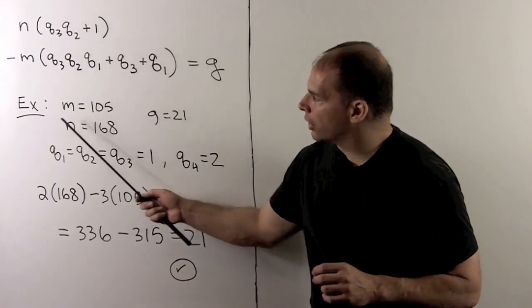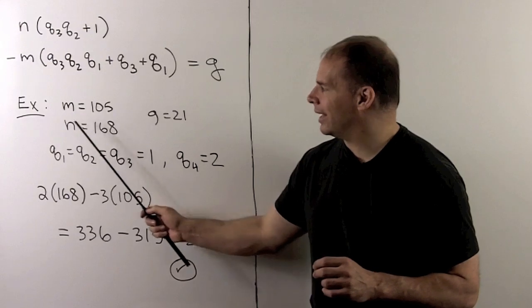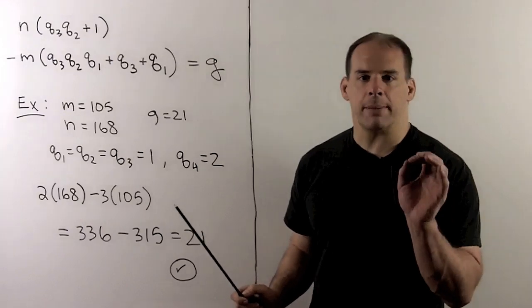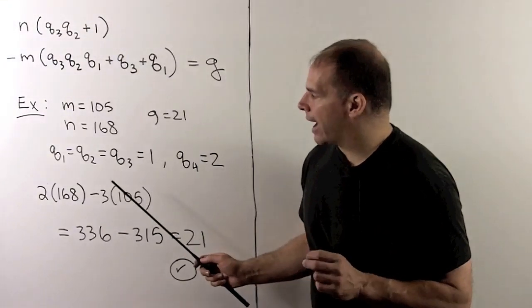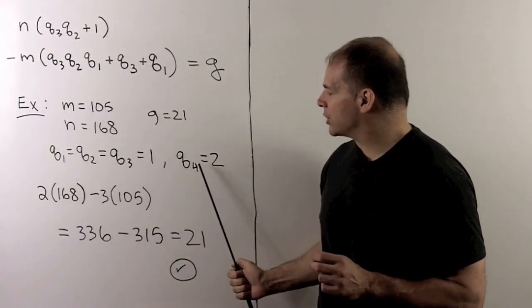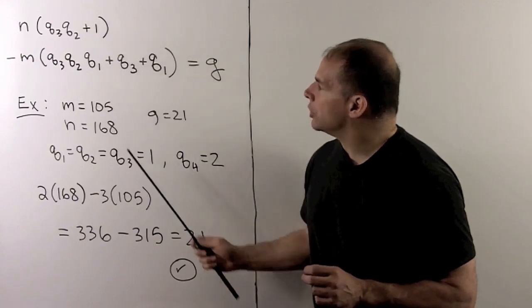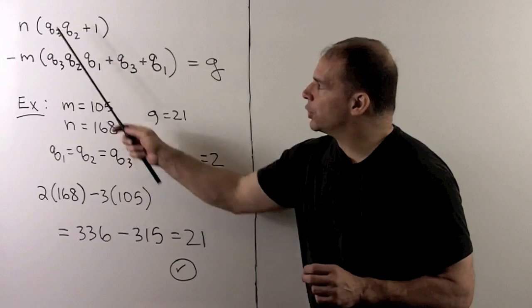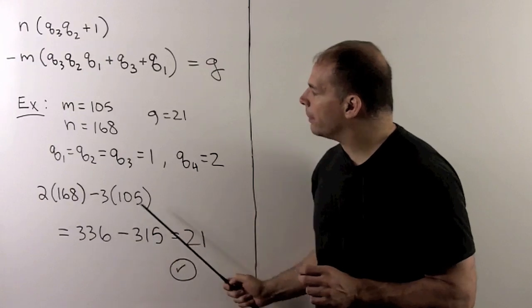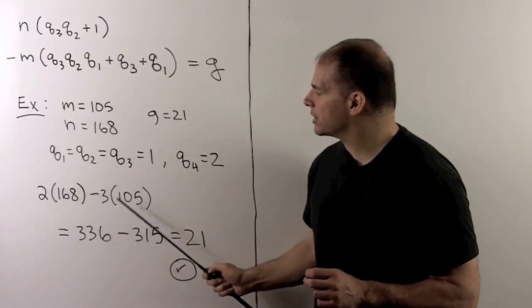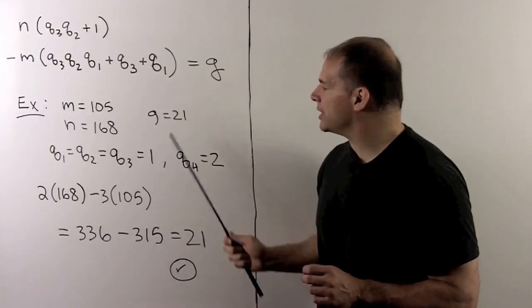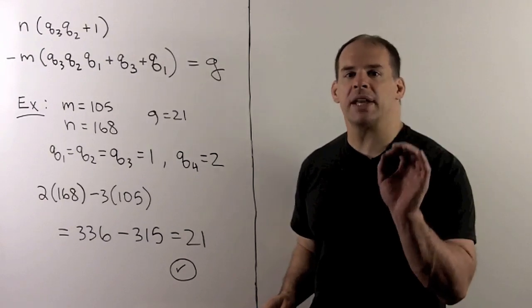Now, if we look at our example, so here we have m equal to 105, n equal to 168. Note m has to be the smaller number. The greatest common divisor is 21. So, what do we have? When we worked out the Euclidean algorithm, the q's were equal to 1, except for the last one, q4, which was equal to 2. So, using our formula here, we have 2 times n minus 3m is equal to g. So, if I work this out, 2 times 168, 336. 3 times 105 is 315. Take the difference, we get 21, which is equal to our g. So, Bézout's identity checks out.